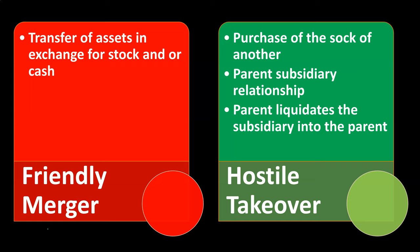In a hostile takeover, on the other hand, we have the purchase of the stock of another company — a parent and subsidiary relationship is created, and then the parent liquidates the subsidiary into itself. In a hostile situation, one company, typically larger, goes straight to the stockholders rather than to management, looking to purchase enough stock — over 50% — to have a controlling interest.